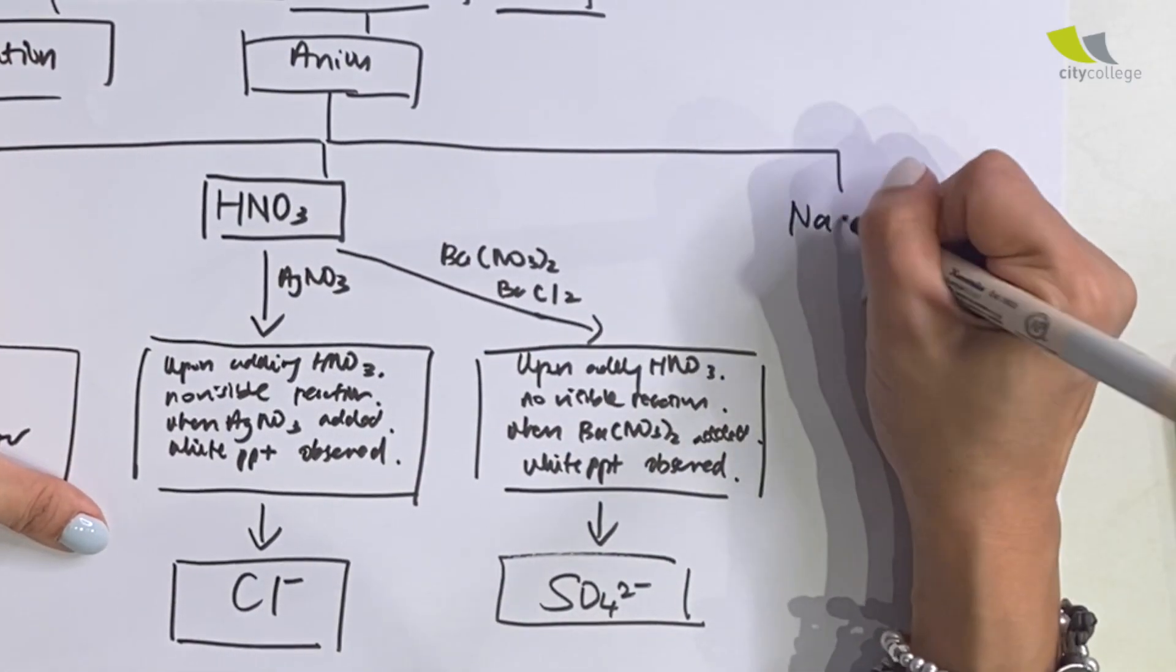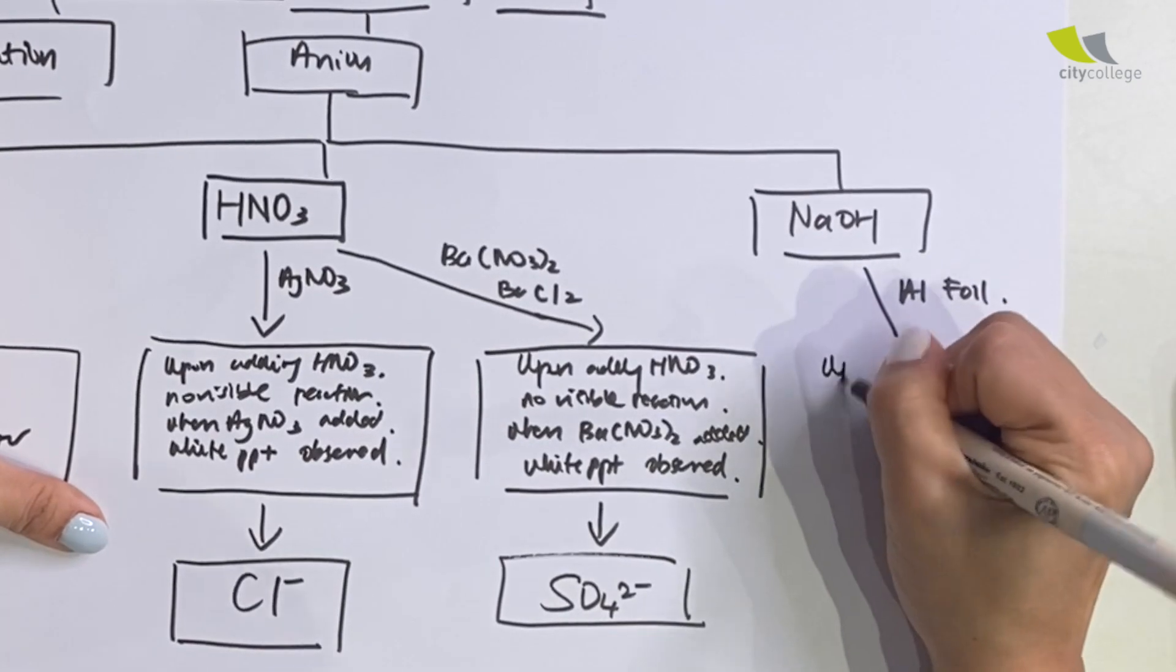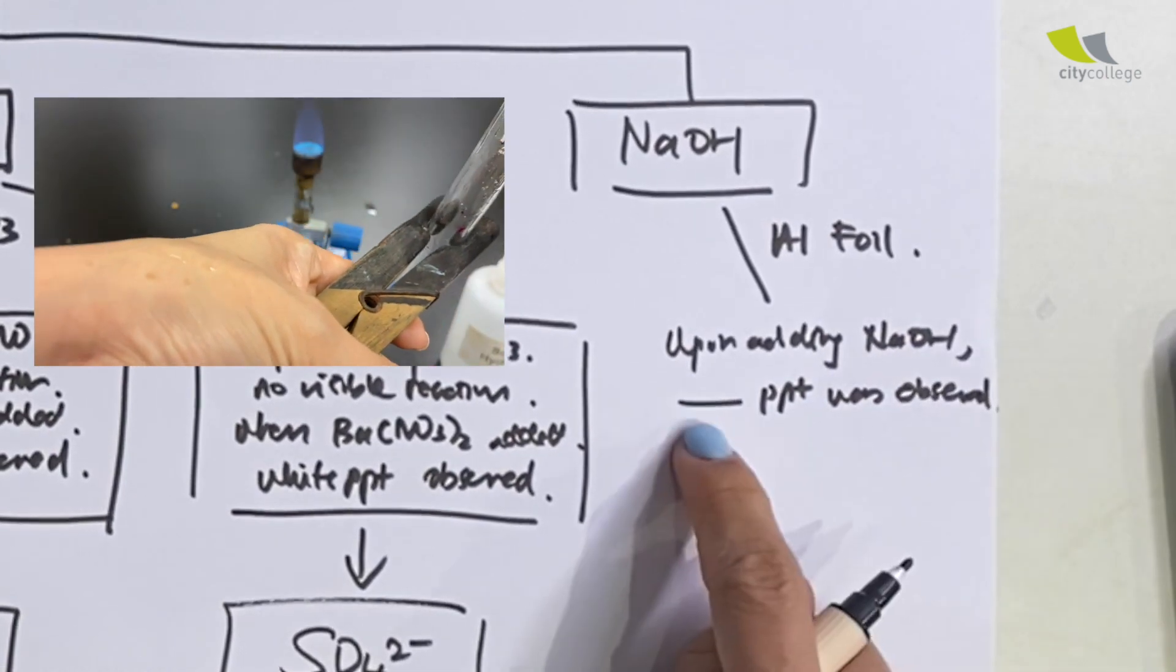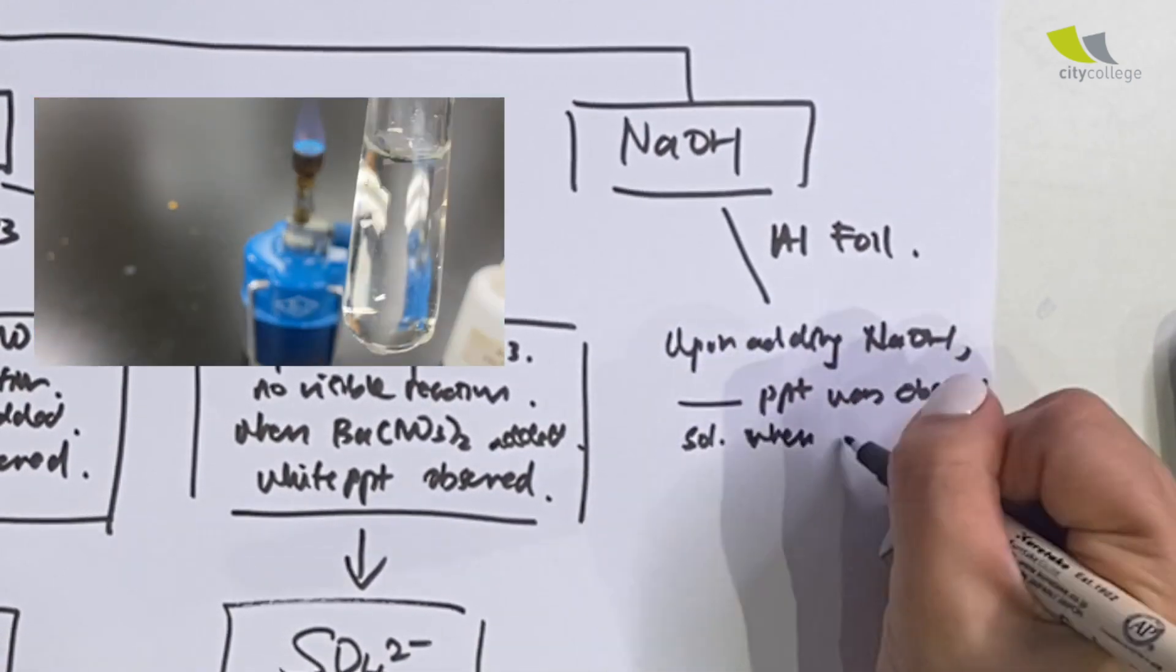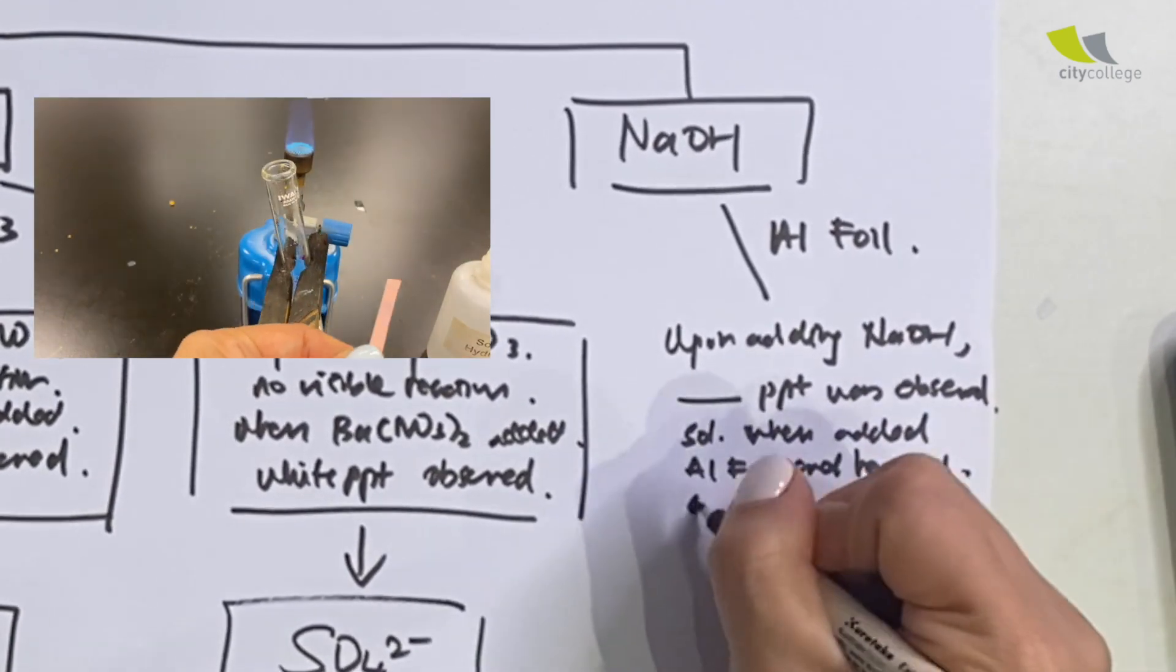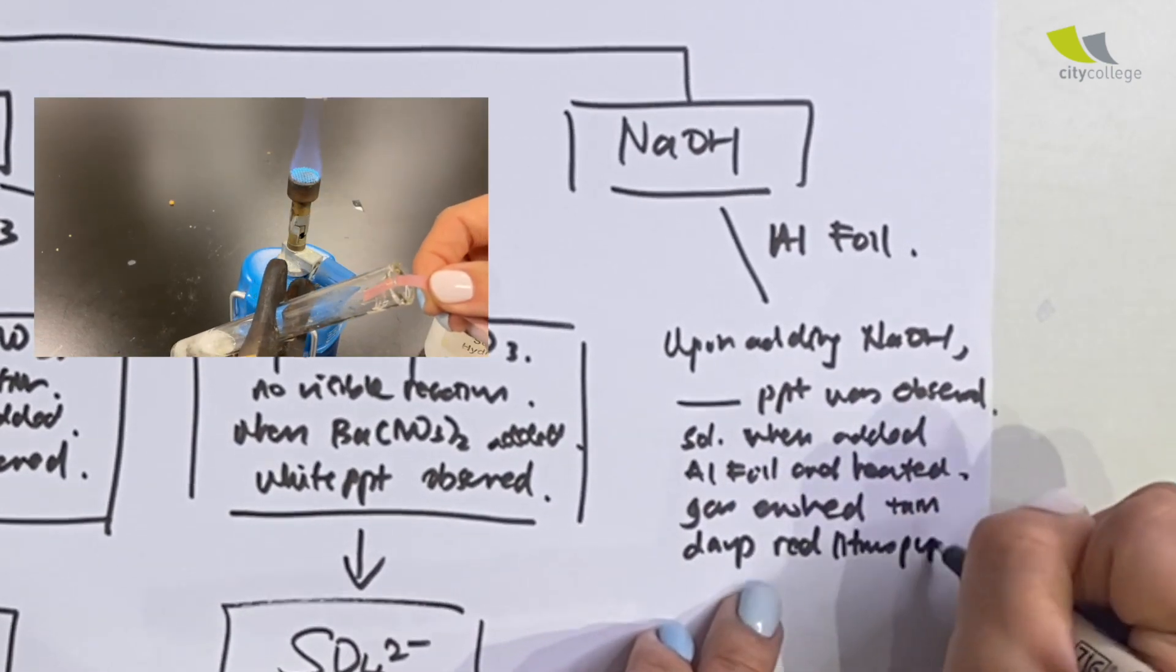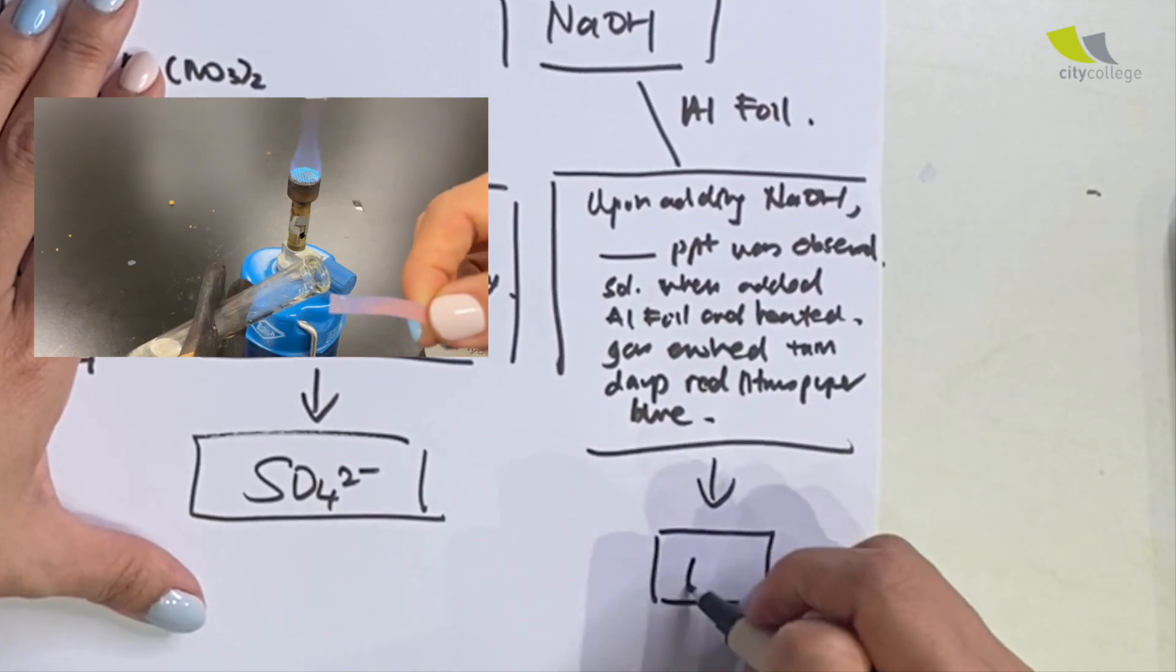Next, they add NaOH, sodium hydroxide, followed by aluminium foil. Upon adding NaOH, white PPT was observed. Sometimes you will see an observation of the colour changes, sometimes you will not, but it's okay. Solution, when added aluminium foil and heated, gas evolved, turn red litmus paper blue. Nitrate is present.